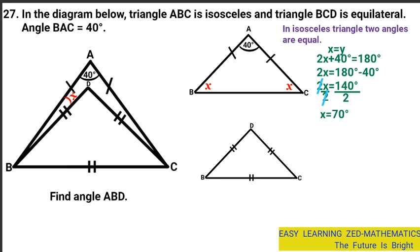In case you're wondering where 180 came from: we know that the sum of interior angles of a triangle adds up to 180 degrees. That's where 180 came from. So the total sum of interior angles of a triangle is 180. Now, X is equal to 70 degrees, so we place 70 degrees at both equal angles in triangle ABC.